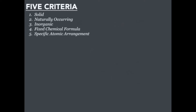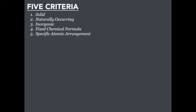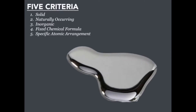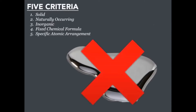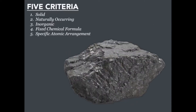Let's test ourselves against those five criteria: must be solid, naturally occurring, inorganic, have a fixed chemical formula, and have an orderly crystal structure. A pool of liquid mercury cannot be a mineral because it fails criteria one — it is a liquid. Bituminous coal is solid and naturally occurring, but because it's formed from ancient tropical plants, it is organic and fails criteria three — so coal is not a mineral.